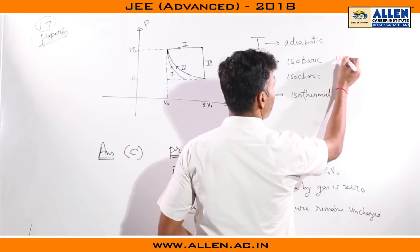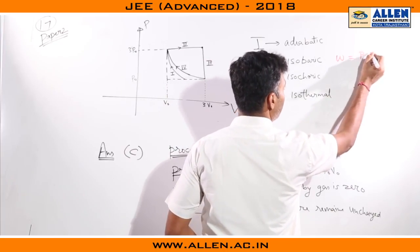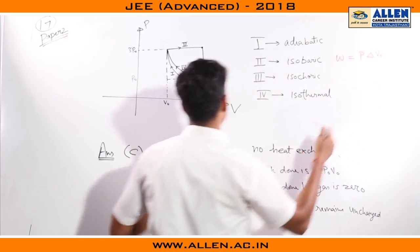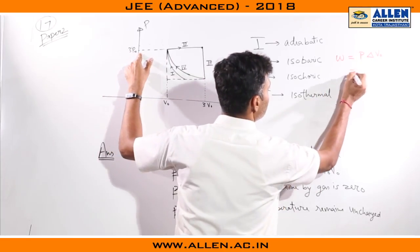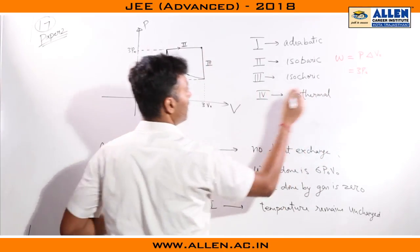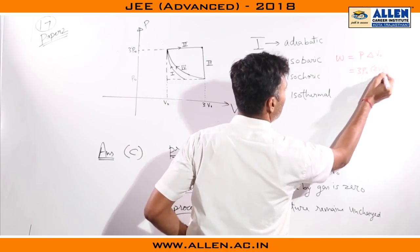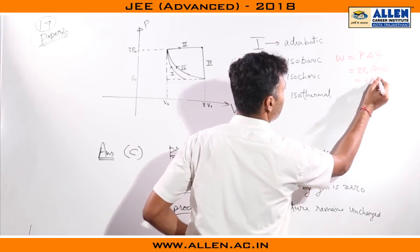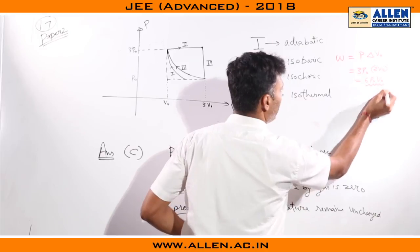Process 2 as we can see is an isobaric process. Work done can be calculated using the relation P delta V. P here was 3P₀ and the change in volume was 2V₀. So we get a network of 6P₀V₀.